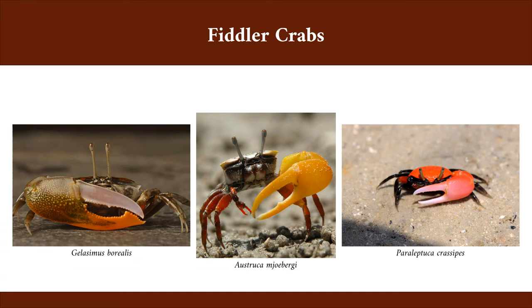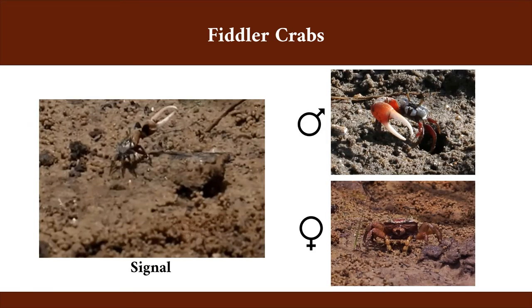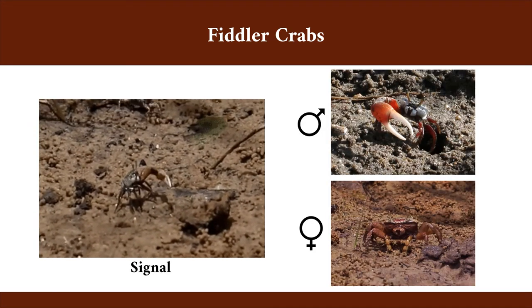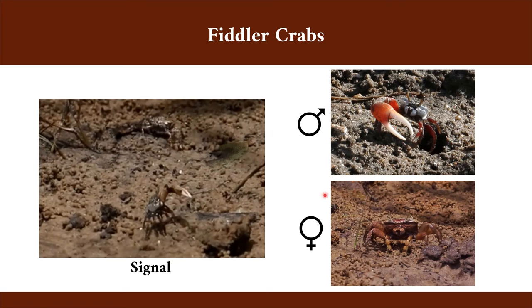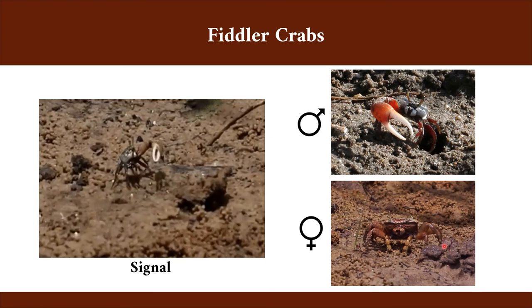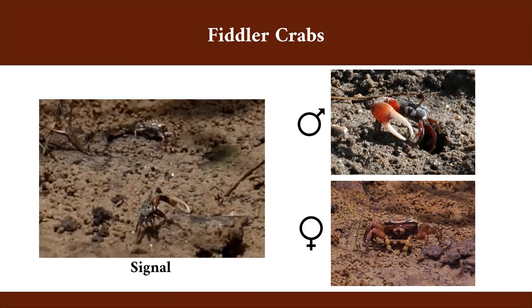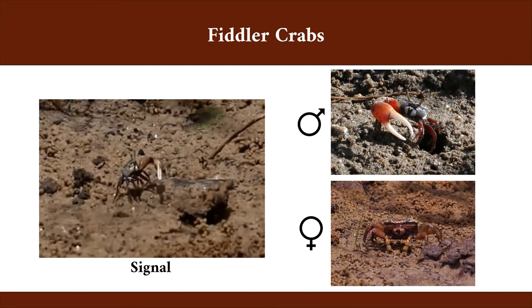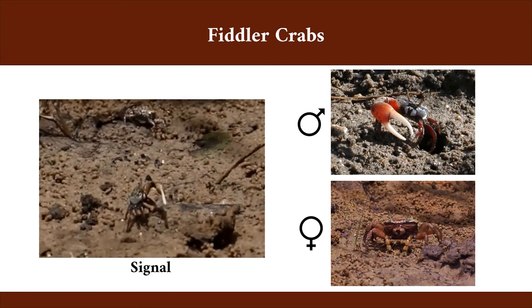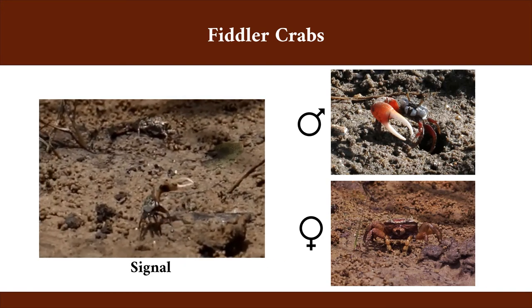Male fiddler crabs are known for having major claws that function not only as a weapon, but also as assessment signals of male quality. They use their major claws in waving displays to threaten other males and attract females to their burrows. The signaler's claw size and wave rate, as well as some acoustic and seismic signals, are known to be assessed by male and female receivers.